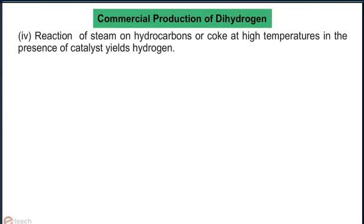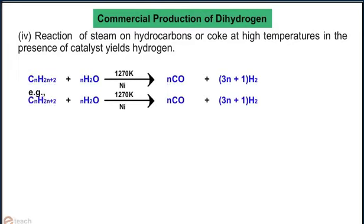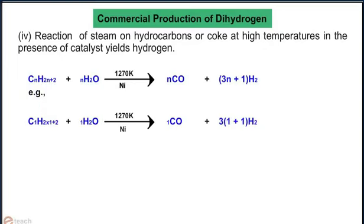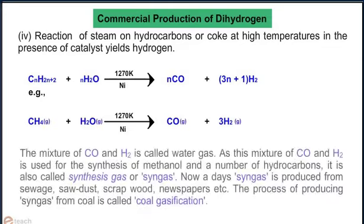Method 4: Reaction of steam on hydrocarbons or coke at high temperatures in the presence of a catalyst yields hydrogen. The general reaction: CₙH₂ₙ₊₂ + nH₂O at 1270K with nickel as catalyst gives n molecules of CO plus (3n+1) molecules of H₂. For example, when n=1: CH₄(g) + H₂O(g) → CO(g) + 3H₂(g). The mixture of CO and H₂ is called water gas.